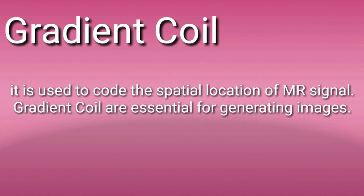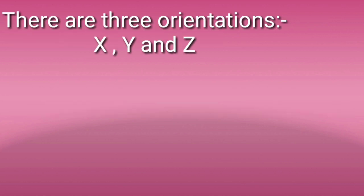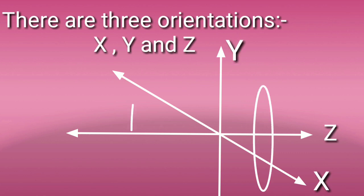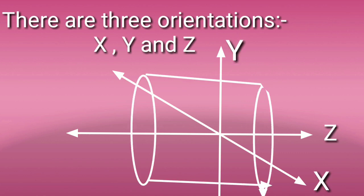Gradient coil is mainly used for generating images. Images are generated using the gradient coil, and it has three orientations: X, Y, and Z. You can see here in the diagram the lying position of the patient — the Z-axis is the axial one, then the Y-axis and X-axis — and each has a different role in MRI imaging.